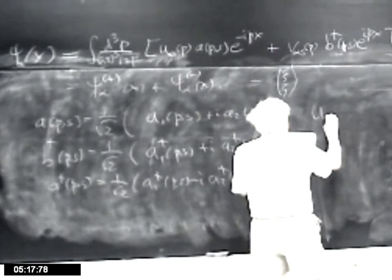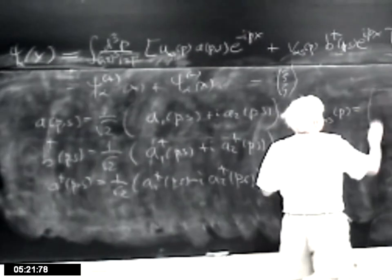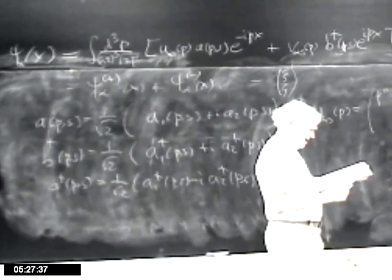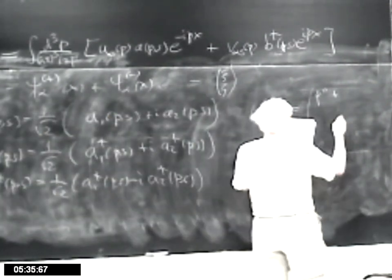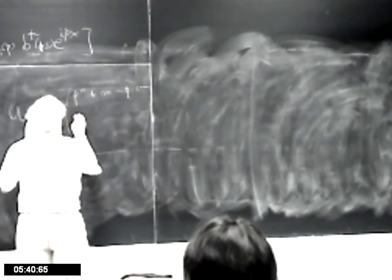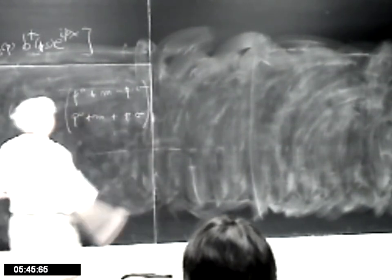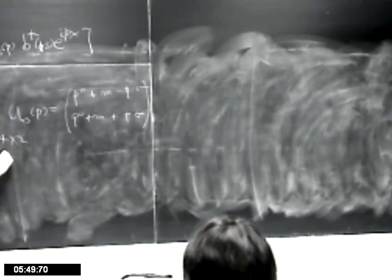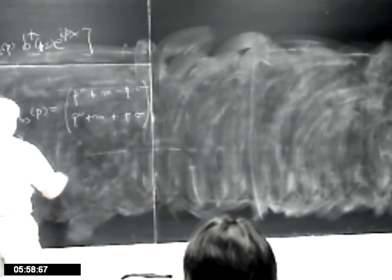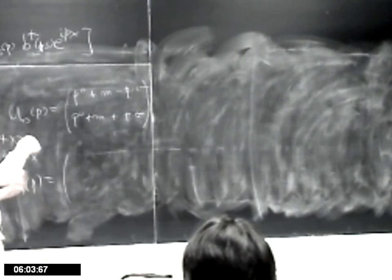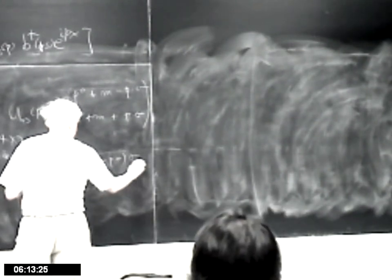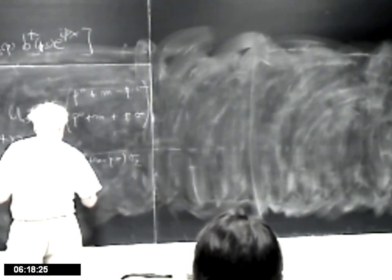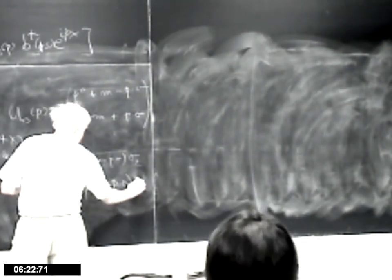This matrix U_αs(p) is derived in the notes on Wigner rotations and how fields transform under Lorentz transformations — it's page 37 of those notes. It is: top block (P₀ + M − P·σ), bottom block (P₀ + M + P·σ). So you see it's a 4×2 matrix. Similarly, V_αs(p) is also a 4×2 matrix but a different one: it looks like (P₀ + M − P·σ)σ₂ on top and (−P₀ + M + P·σ)σ₂ on the bottom.